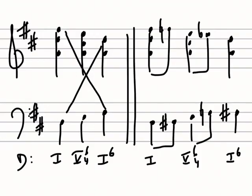In the first example, in the key of D major, here's a diatonic voice exchange where the D in the bass becomes the D in the soprano, and the F sharp in the soprano becomes the F sharp in the bass.